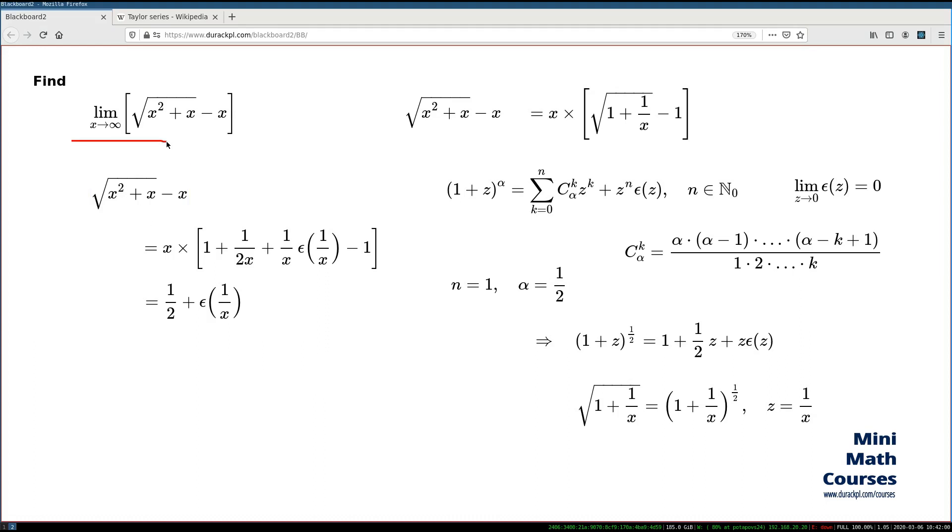So now the limit we need to find becomes equivalent to the limit like this. 1/2 is just a constant. It can be taken out of the limit. And now we have to find the limit of the epsilon function of 1/x when x goes to infinity. Once you substitute z for 1/x, the expression becomes as simple as this and you can reference the only property of epsilon function which we need.